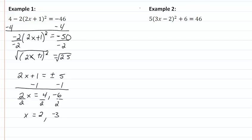Now in example 2 here, again we want to get the exponent by itself, so we're going to subtract 6 from both sides. So now we have 5 times 3x minus 2, quantity squared, equal to 40. Divide by 5.